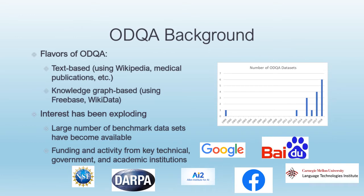While the more limited task of question answering involves providing an answer based on a single passage of text, ODQA requires information retrieval from a large corpus of documents. The corpus can be text-based, such as Wikipedia or a set of medical publications, or it can be based on a knowledge graph, such as Freebase or Wikidata. Because open domain question answering has the potential to help everyday humans understand the world better, interest has been exploding recently, with a large number of ODQA benchmark datasets available and key players pouring funding and effort into the field.